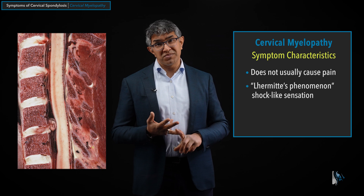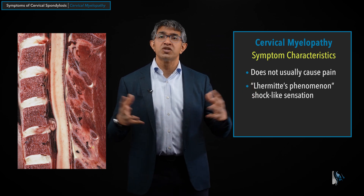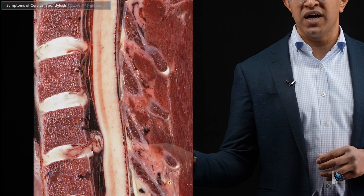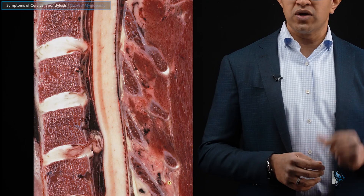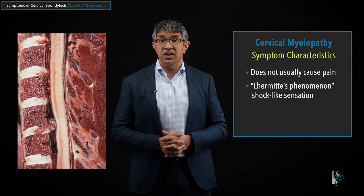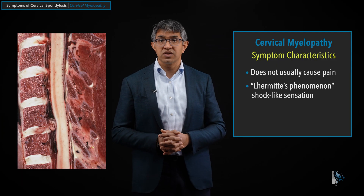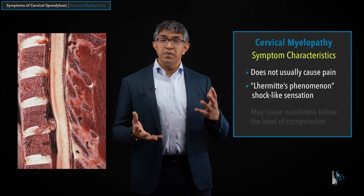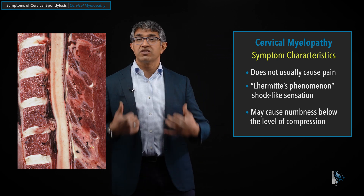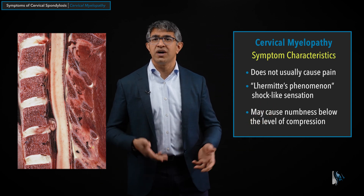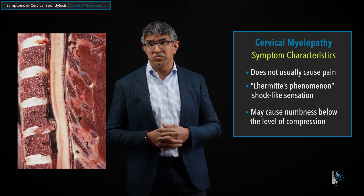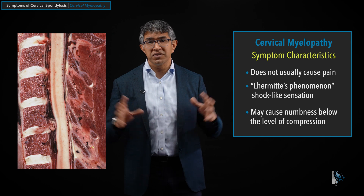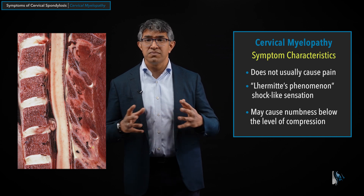Another thing people sometimes notice is a Lhermitte's phenomenon — not super common, but a condition where leaning forward or back causes the spinal cord to get a jolt, producing a lightning bolt or shock-like sensation that goes through the body. Lastly, people can notice numbness from the level of compression down, related to loss of sensory fibers conducting back up to the brain. These are additional things that people may or may not experience with cervical myelopathy.